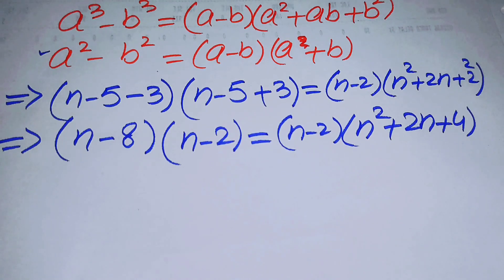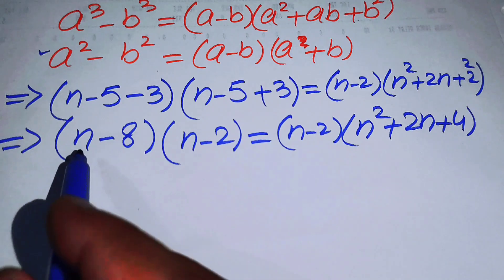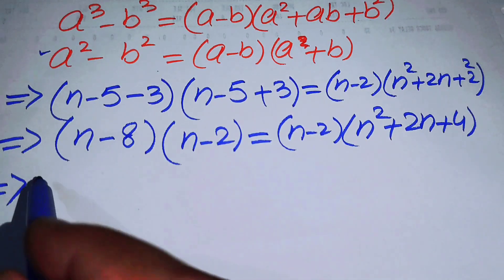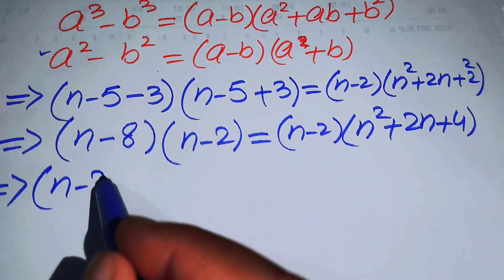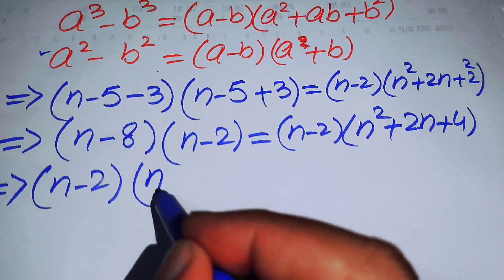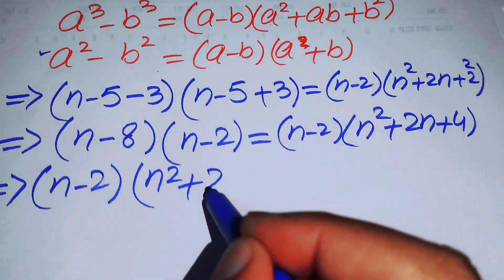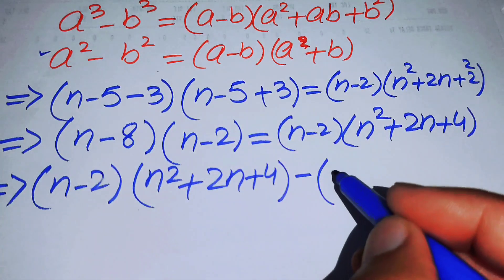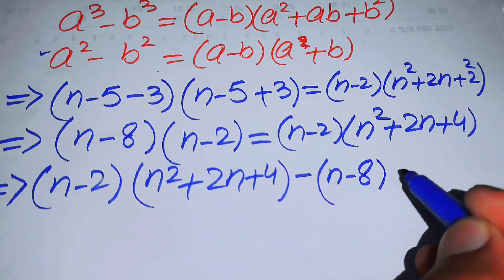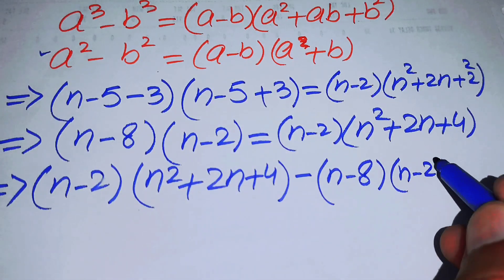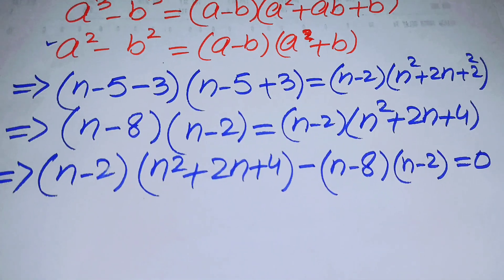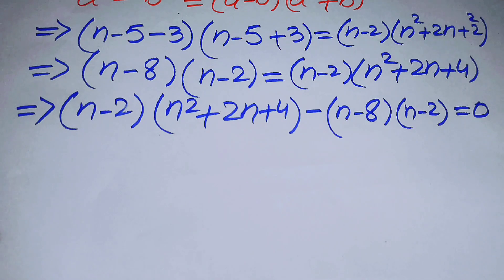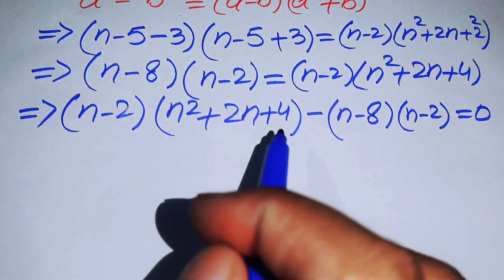In the next step, we move all terms to the right-hand side. Moving the left-hand side factors gives: (n - 2)(n² + 2n + 4) - (n - 8)(n - 2) = 0.